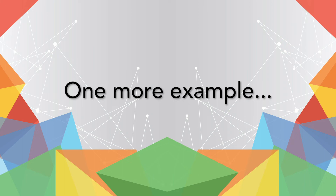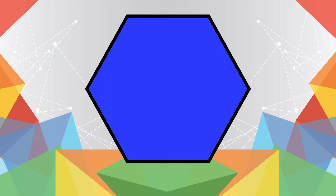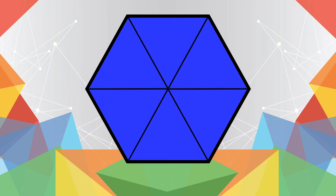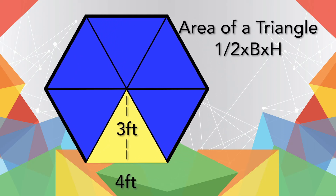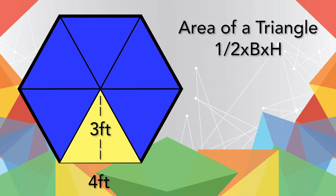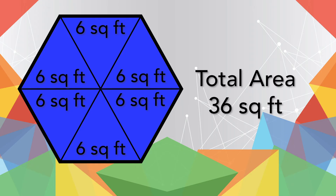Now that we've mastered the area of triangles, let's look at one more example. Let's say your neighbor is building a deck in her backyard and she wants to know its area so she can order the wood for the floor. The deck is in the shape of a hexagon, but it can be broken up into six triangles, each with a base of 4 feet and a height of 3 feet. Using our triangle formula, the area of each triangle is 6 square feet, and therefore all six triangles that make up the entire deck equal 36 square feet. She'll need to order 36 square feet of wood for the floor.